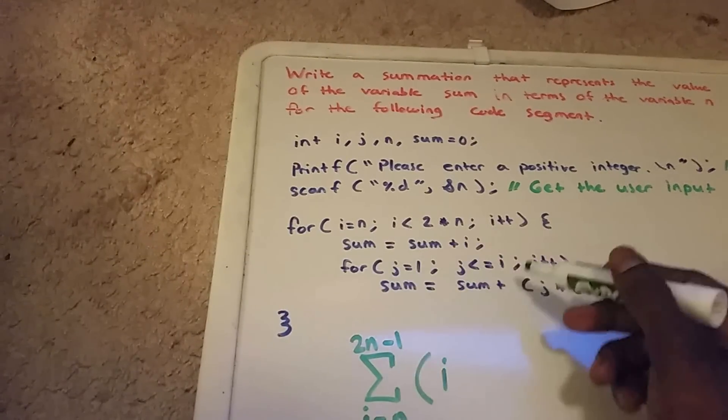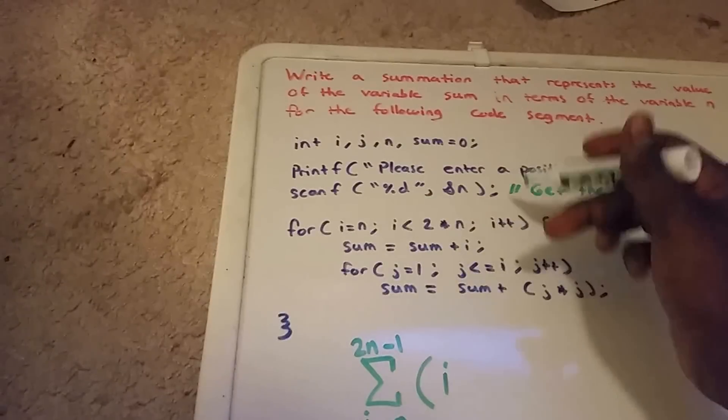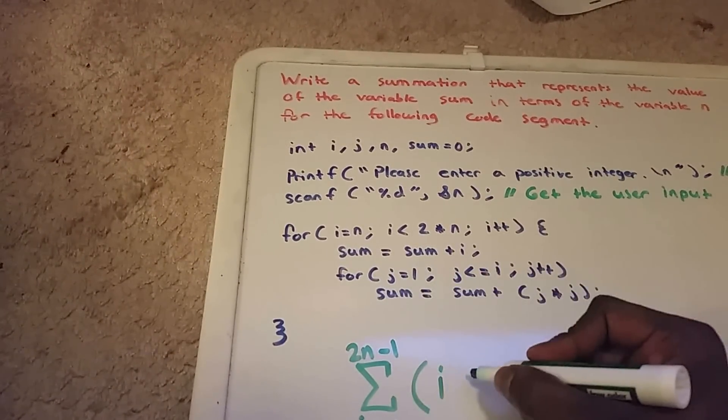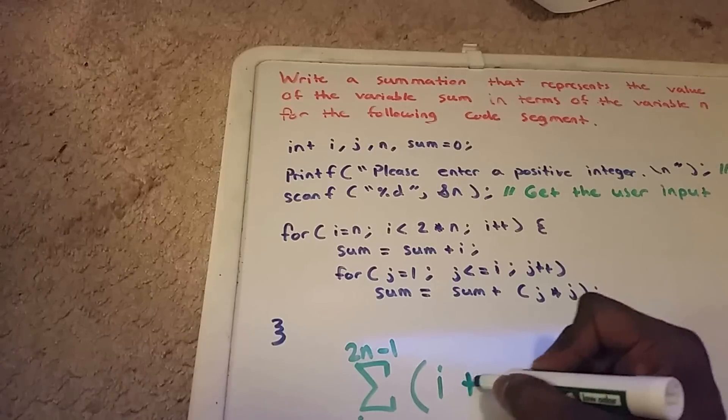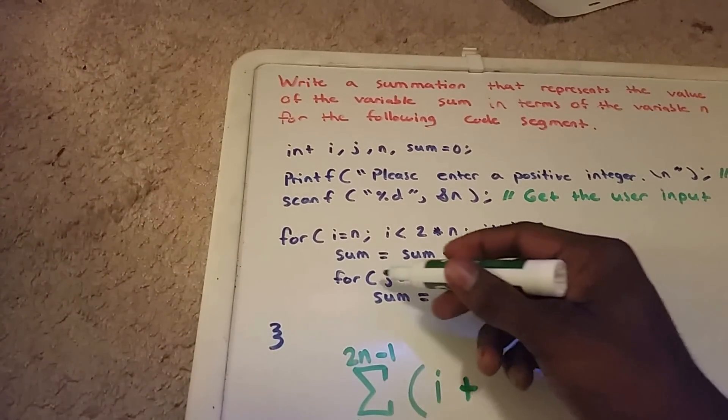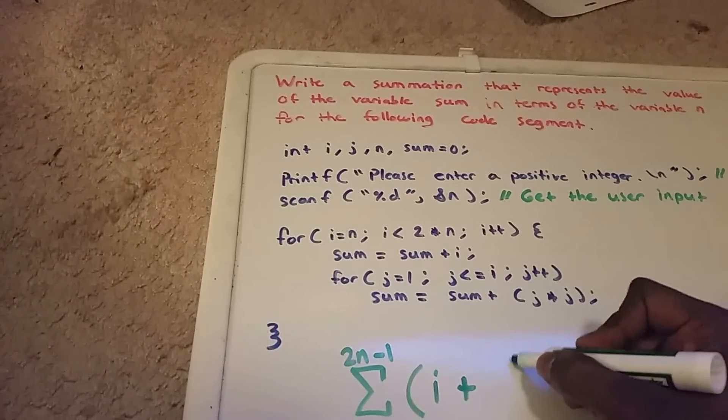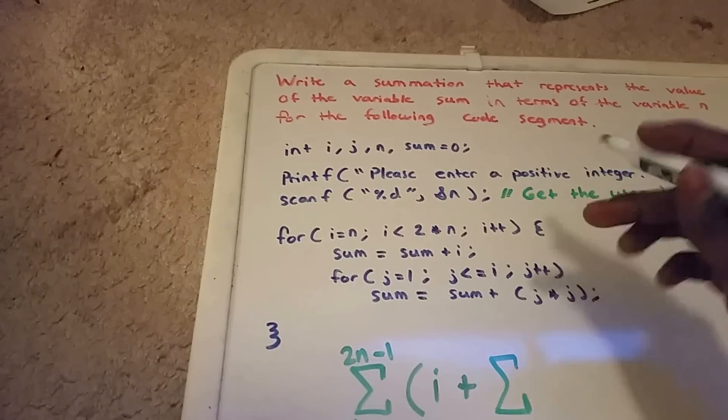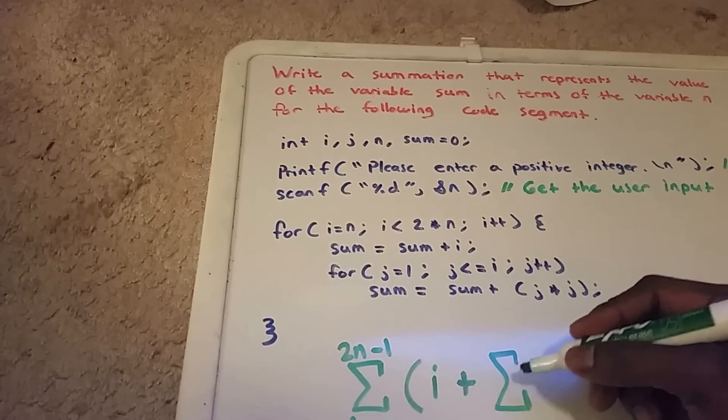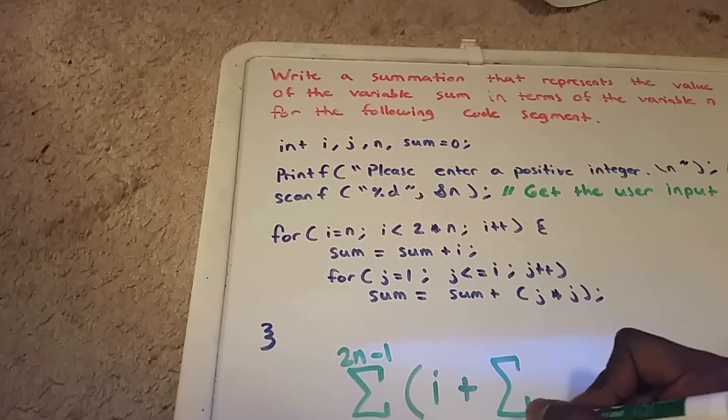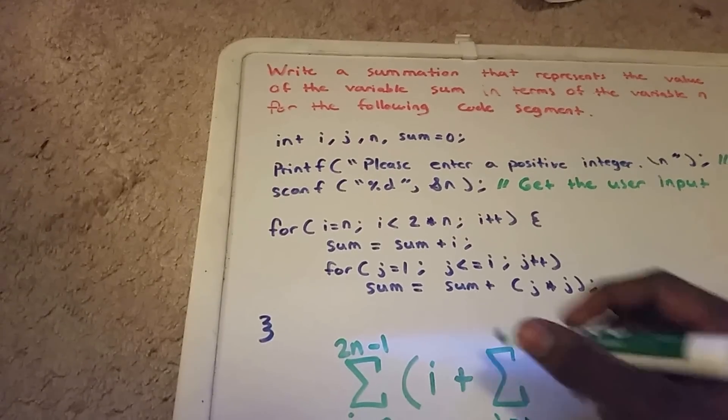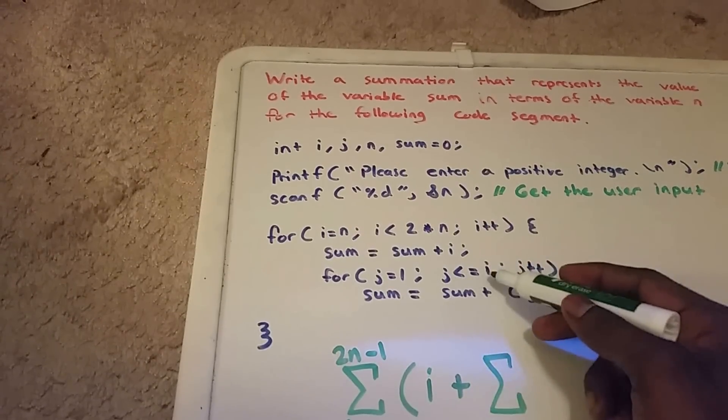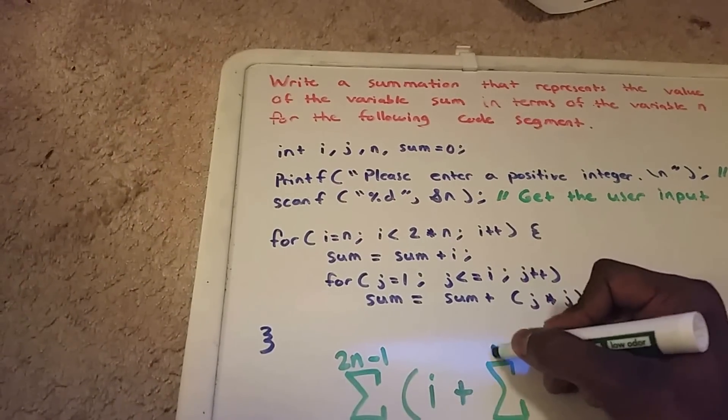Then we have another for loop here within this outer loop, and we have another sum variable. We want to add this other variable which is in this for loop, so it's within this summation. This summation goes from j equals one, because it's the second for loop, to j less than or equal to i, so it means that it goes to i.